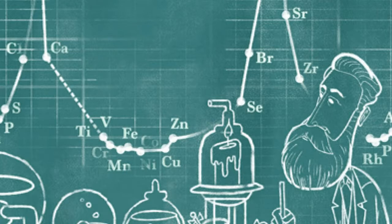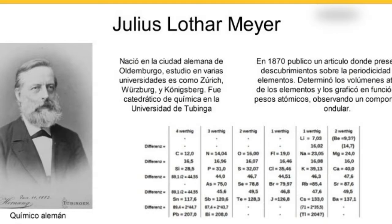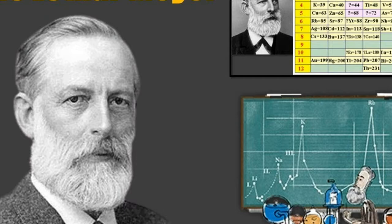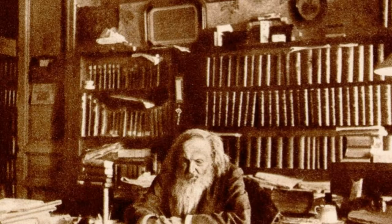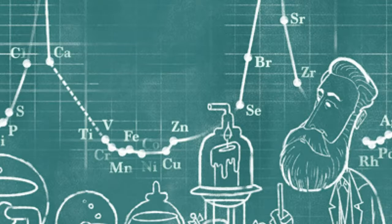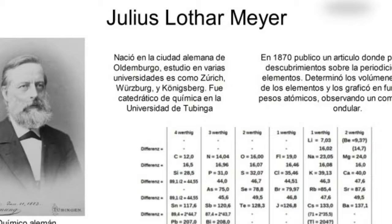In 1876, Meyer became professor of chemistry at the University of Tübingen, where he served until his death. Meyer is best known for his part in the periodic classification of the elements. He noted, as J.A.R. Newlands did in England, that if each element is arranged in the order of their atomic weights, they fall into groups of similar chemical and physical properties, repeated at periodic intervals. According to him, if the atomic weights were plotted as ordinates and the atomic volumes as abscissae, the curve obtained a series of maxima and minima, the most electropositive elements appearing at the peaks of the curve in the order of their atomic weights.